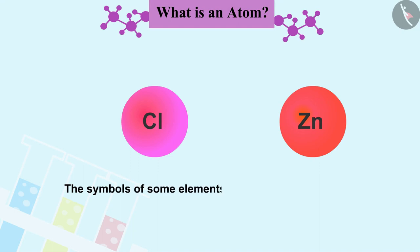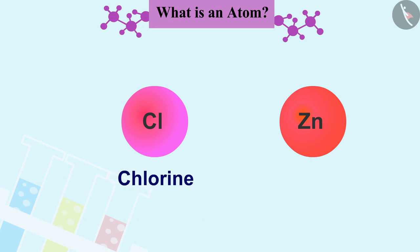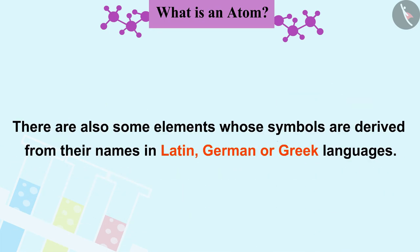Similarly, the symbols of some elements are made by combining the first alphabet of their English names and any one alphabet that comes later, such as for chlorine Cl, for zinc Zn, etc.